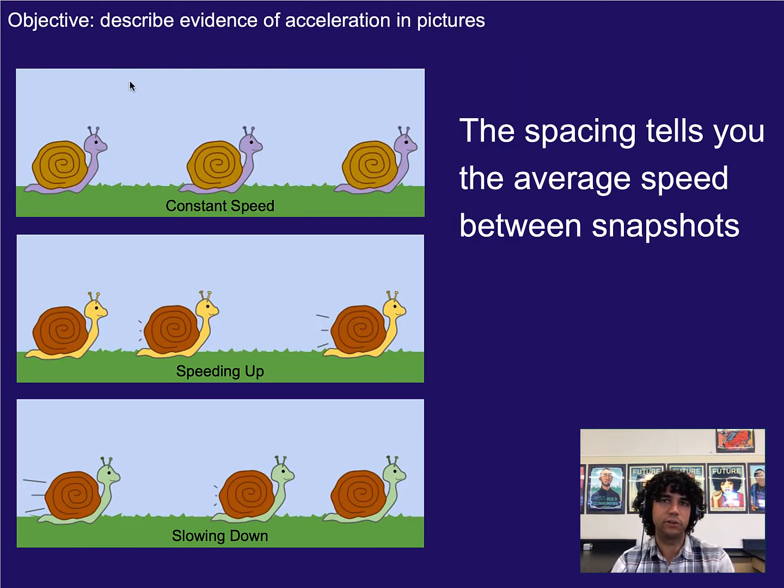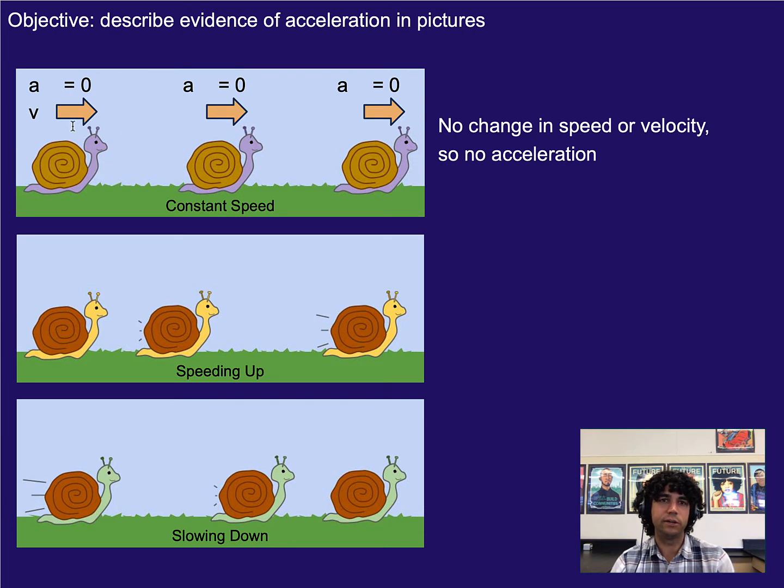Let's take a look at acceleration a little bit more and talk about the direction of acceleration. Remember that spacing tells you the average speed between snapshots. Here we can see this snail is going a constant speed, here we can see this snail is speeding up, and here we can see this snail is slowing down because the spacing decreases versus here the spacing increased versus here the spacing stayed the same. If we're looking at this one, we know that the velocity is not changing. Well, if there's no change in speed or velocity, then that means there's no acceleration since acceleration is just the change in velocity per second. If something has a constant velocity, its acceleration is zero.